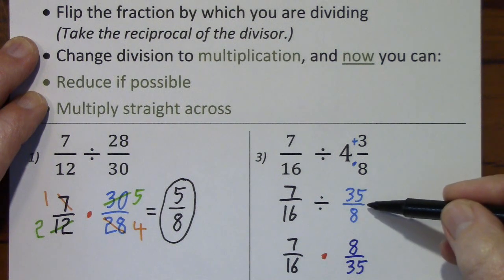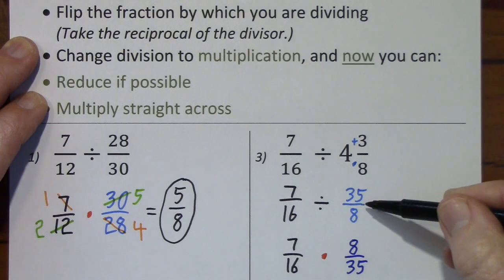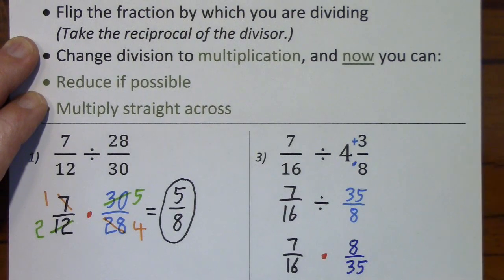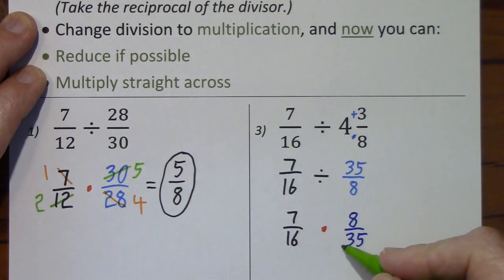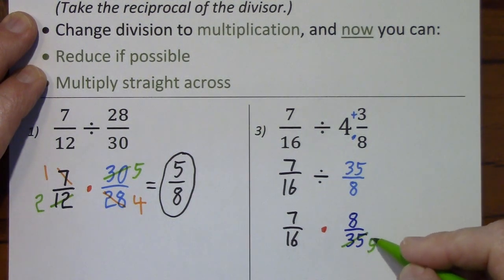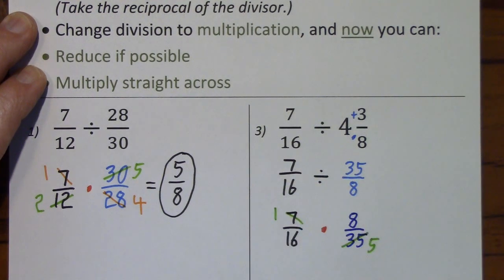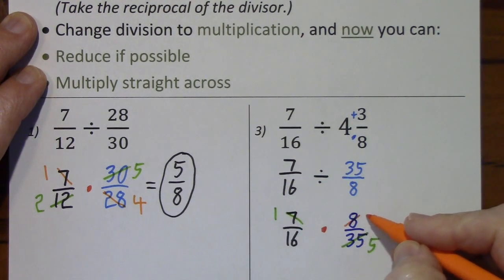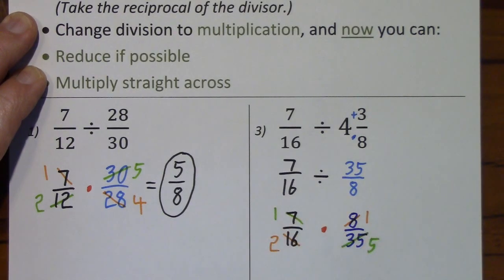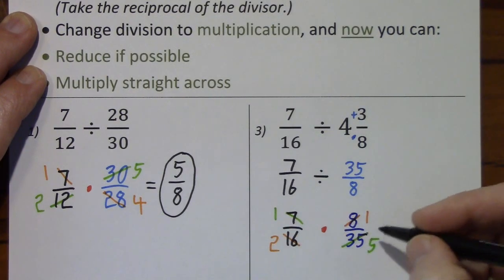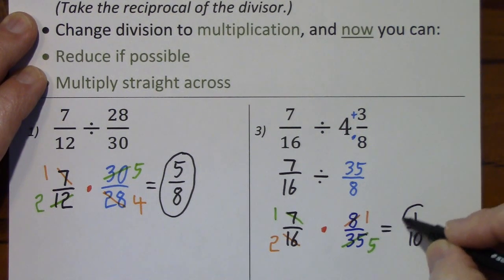It's fine if you skip this step — you can go directly from here to here. I just wanted to show explicitly what you were doing. Divide by 7. Divide by 7. Divide by 8. Divide by 8. Now you multiply straight across. And there you go.